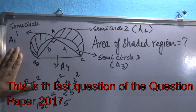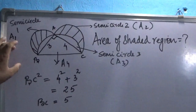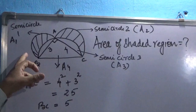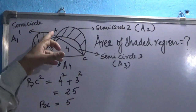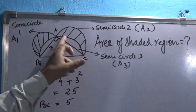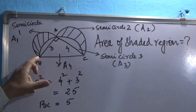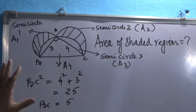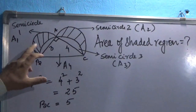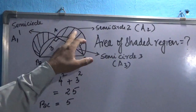This is the last question of Section D and it carries four marks. Here we have three semicircles: semicircle 1, semicircle 2, and a bigger one, semicircle 3. Inside this bigger semicircle there is a right angle triangle which is given. We have to find out the area of the shaded region — only this area plus this area.